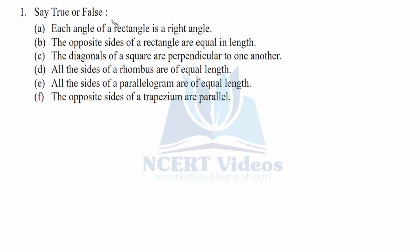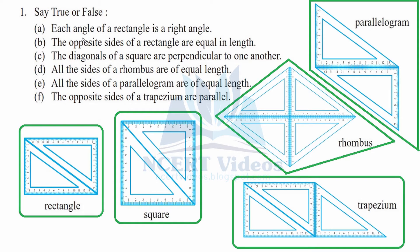Question one: True or false. Part A - each angle of a rectangle is a right angle. This is your rectangle, and we have studied that a rectangle has every angle as 90 degrees. There are four angles, all measuring 90 degrees. Thus part A is correct. Part B - the opposite sides of a rectangle are equal in length.